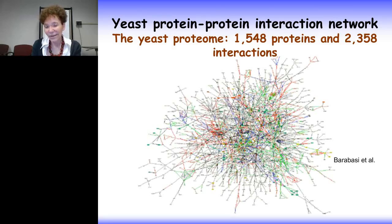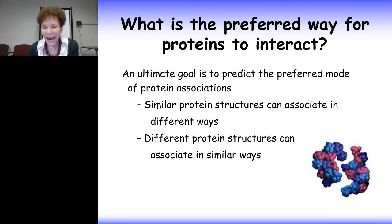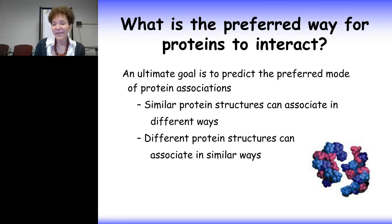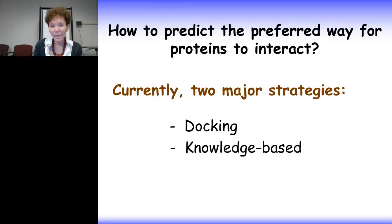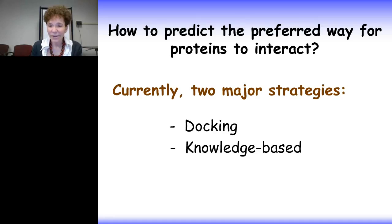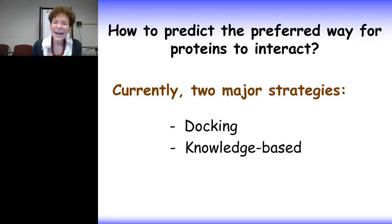To understand how the protein functions, to understand signaling under physiological conditions and in disease, and to understand the signaling dynamics under varied conditions, we need to have structures and we need to be able to predict what is the preferred way for proteins to interact. An ultimate goal is to predict the preferred mode of protein associations. We know similar protein structures can associate in different ways, and different protein structures can associate in similar ways.